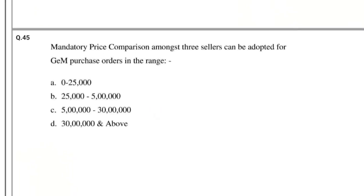Question number 45: Mandatory price comparison among three sellers can be adopted for GEM purchase orders in the range — options: (A) 0 to 25,000, (B) 25,000 to 5 lakh, (C) 5 lakh to 30 lakh, (D) 30 lakh and above. The answer is Option B: 25,000 to 5 lakh.